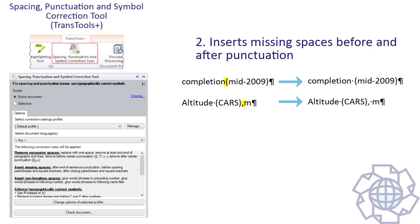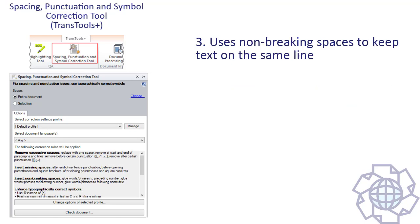Second, the Spacing, Punctuation and Symbol Correction tool inserts missing spaces before and after certain punctuation signs. Third, it uses non-breaking spaces instead of regular spaces to make sure that closely related text stays on the same line, making it easier to read the text correctly.